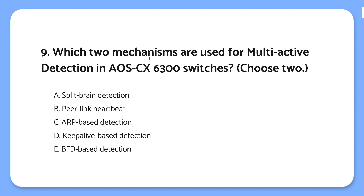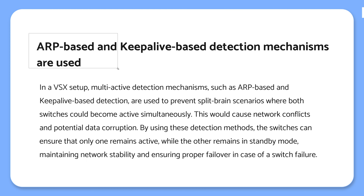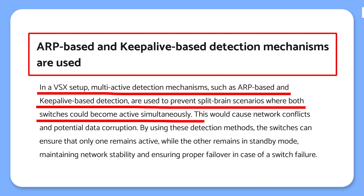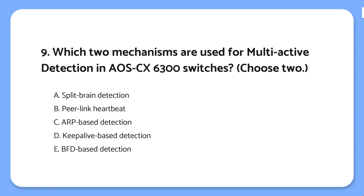Question 9: Which two mechanisms are used for multi-active detection in AOS-CX 6300 switches? The knowledge point is that ARP-based and keepalive-based detection mechanisms are used. Multi-active detection in VSX setups ensures only one switch is active at a time. It uses ARP and keepalive to detect problems and prevent both switches from going active simultaneously, which would cause conflicts. The correct answers are: AOS-CX 6300 switches use ARP and keepalive mechanisms to detect if both switches in a VSX setup become active, preventing conflicts by ensuring only one switch is active.